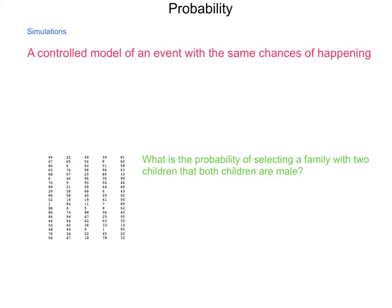I have here a set of numbers. This is a set of, I believe, 100 random numbers, all generated between 0 and 99. Calculators, a lot of calculating systems, are designed to generate random numbers like this. What I have here is I'm going to pick a location to begin with, and I'm going to take that and answer the question, what is the probability of selecting a family with two children that are both male?